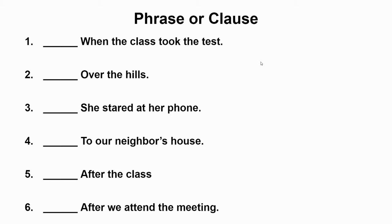'To our neighbor's house' — I have 'house' as a noun, could be the subject, but in actuality it is a prepositional phrase — 'to' is being used as a preposition and 'house' is the object of the preposition. 'After the class' — now this is one of those tricky ones. 'After' can be a dependent clause marker or start a prepositional phrase. I have 'class,' a noun, but there is definitely no predicate, so that's a phrase — a prepositional phrase. Compare that to 'after we attend the meeting' — 'we' is the subject, 'attend' is the predicate — there's a clause.